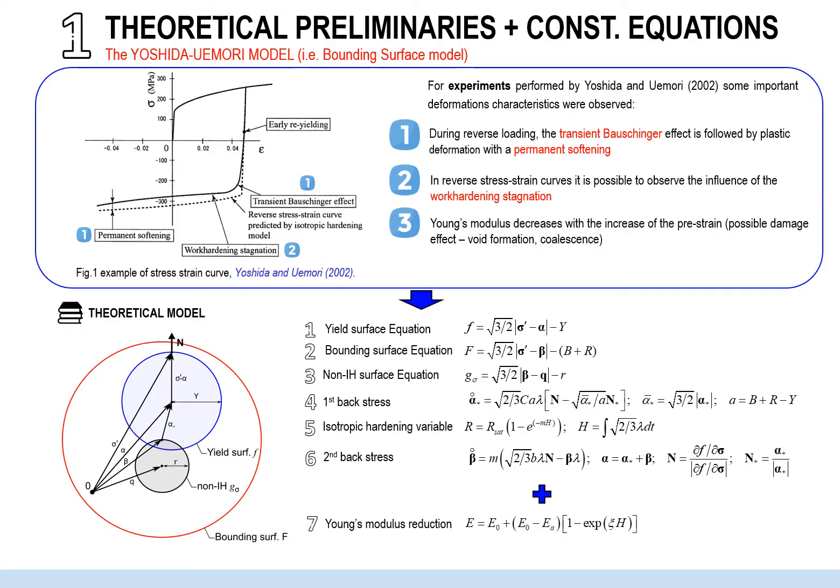Yoshida and Uemori carried out a series of experiments trying to characterize the behavior of steels under fully reversed cyclic loading conditions, especially trying to catch the description of the transient Bauschinger effect, the permanent softening, and the work hardening stagnation.